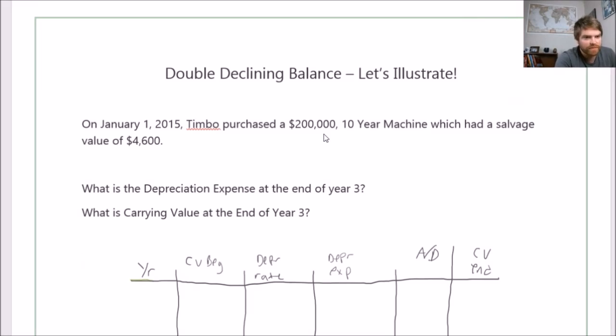The first step with double declining balance is to get our depreciation rate. How do we do that? There's a really easy way to do it. You do 100% divided by the life of the machine. So in this example it would be 100% divided by 10 years, which equals 10%.